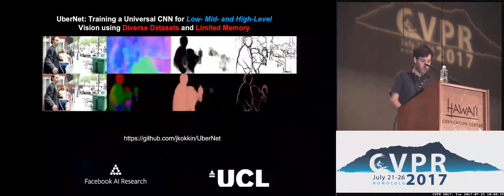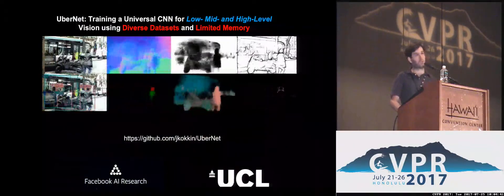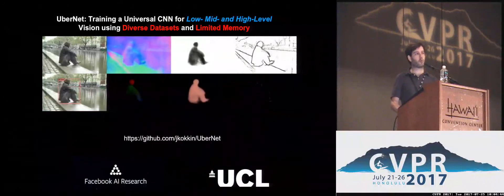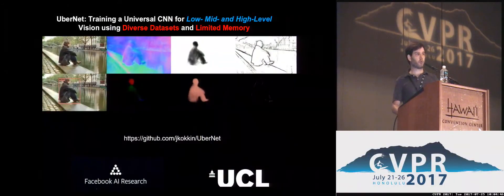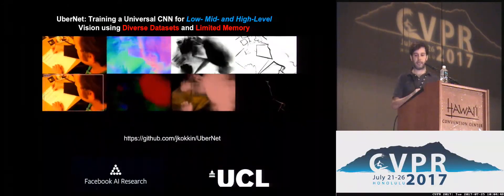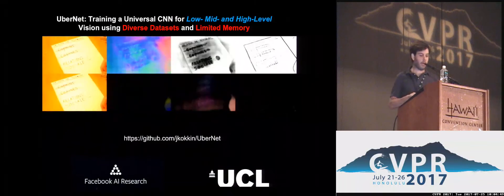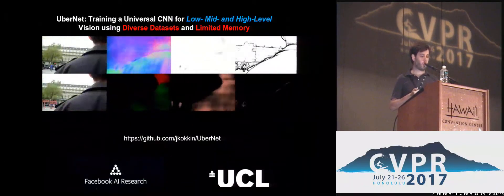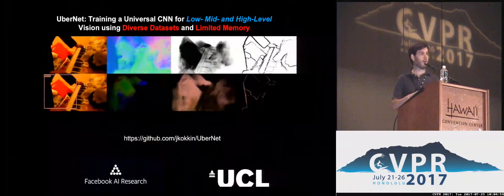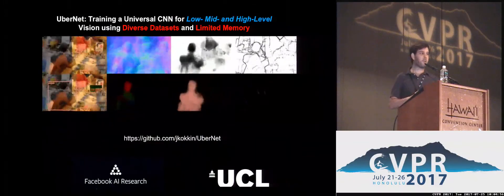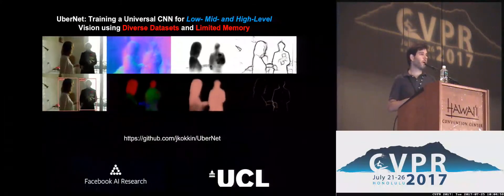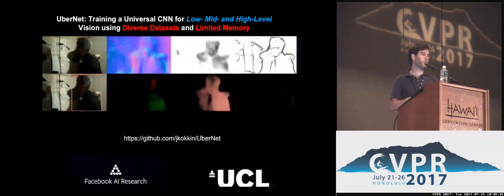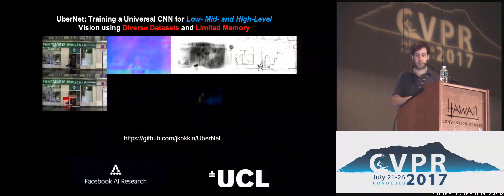To conclude, what we introduced was a universal CNN — UberNet. The main contributions were removing two main roadblocks: limited memory and diverse datasets. You can try the test version of the system, which is already available on GitHub, and see what it gives when you go home and try it on the streets of your hometown. Thank you for your attention.